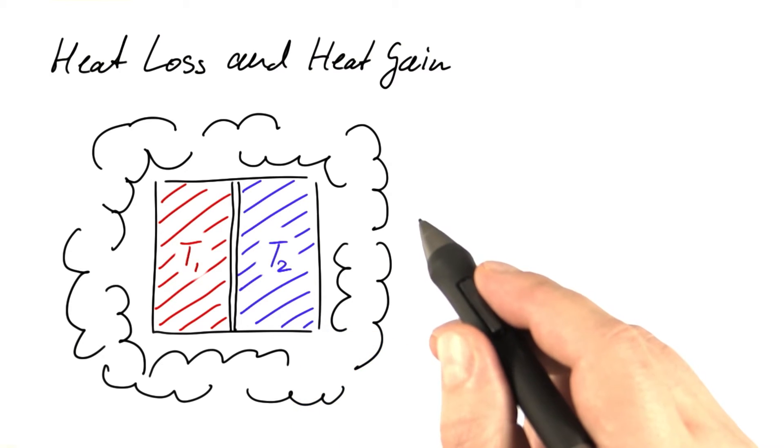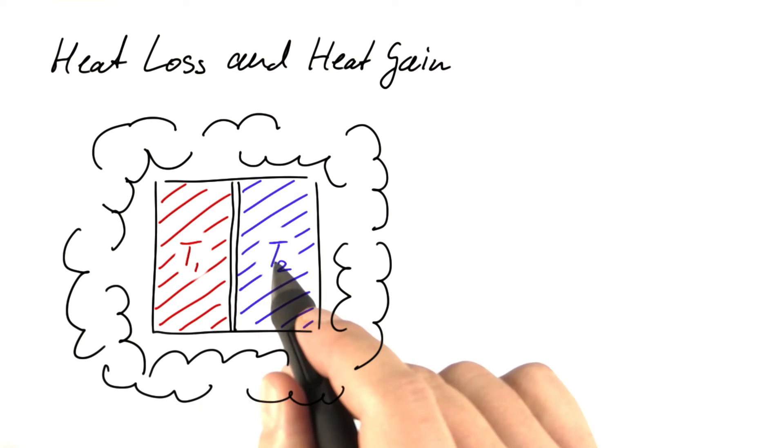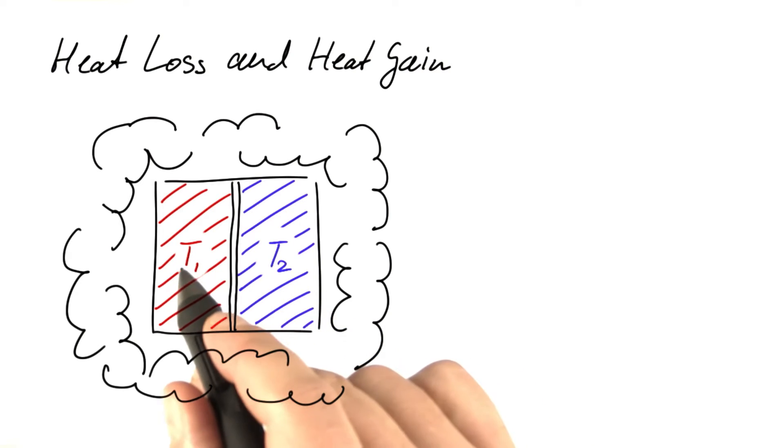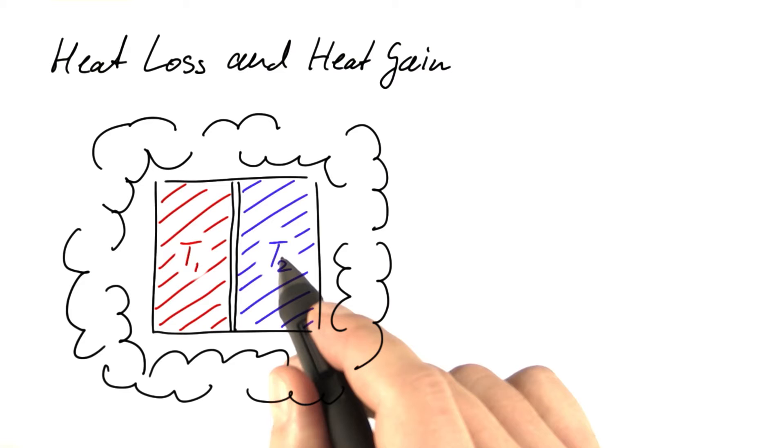Now I want to describe the flow of heat from one compartment to the other and the temporal evolution of the temperature of the left part and the temporal evolution of the temperature of the right part.